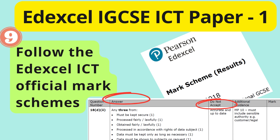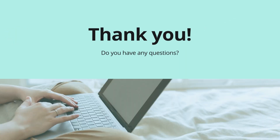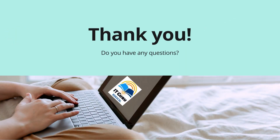So with that, we've covered the nine points to score an A star in your ICT Paper 1. I'm planning to upload the first lesson video next, and until then — goodbye and good luck!